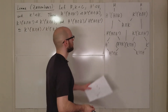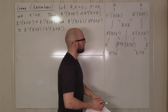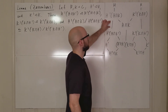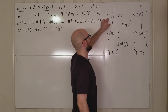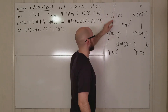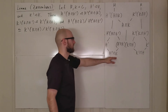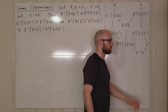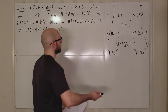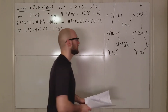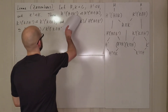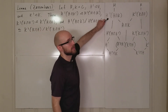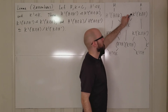But why is this called the butterfly lemma? It's because of what this situation looks like in a diagram. Each of these lines means subgroup — so h prime times (h intersect k) is a subgroup of h, h prime intersect k is a subgroup of h prime, and so on. The lemma is saying this thing is normal in this, and likewise this thing is normal in this.